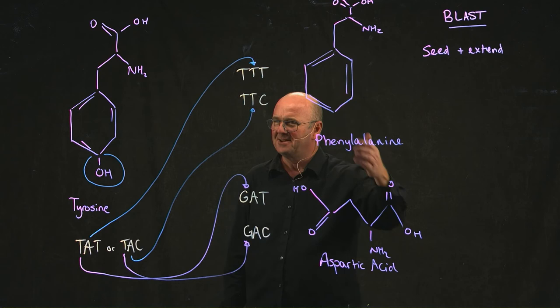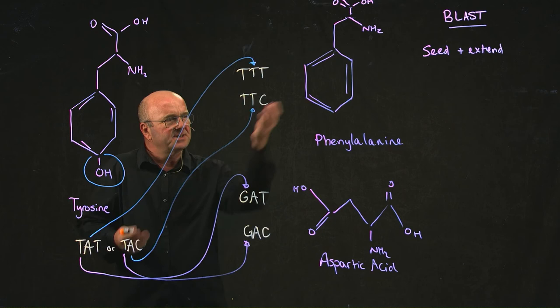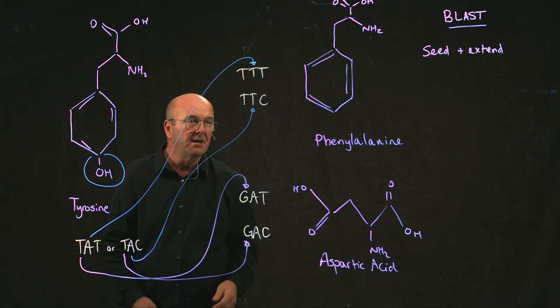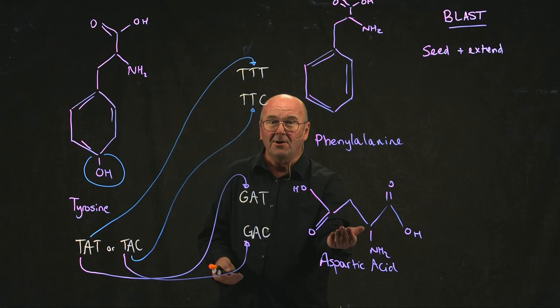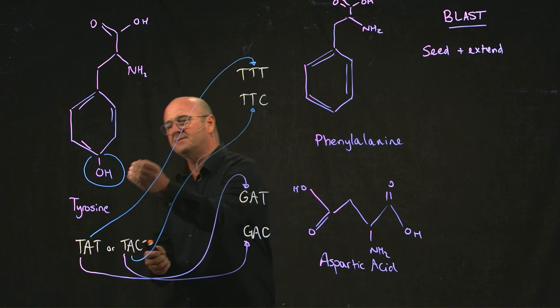So you could imagine that if you're a protein and you're quite happy being a protein and you've got a tyrosine and all of a sudden it switches to a phenylalanine, you're like, eh, it's okay. It's one little hydroxyl group between friends. On the other hand, if you're quite happy being a protein and all of a sudden your tyrosine switches to aspartic acid, you're like, holy moly, this is not going to work, dude. And that's exactly what happens in biology. So you can go from tyrosine to phenylalanine relatively easily. You can't go from tyrosine to aspartic acid without really screwing around with structures of proteins.